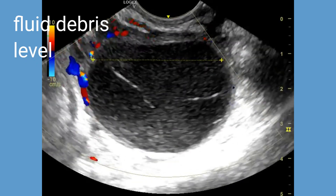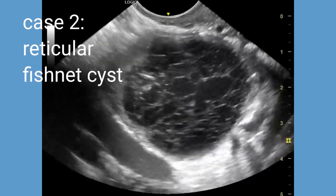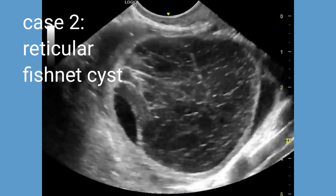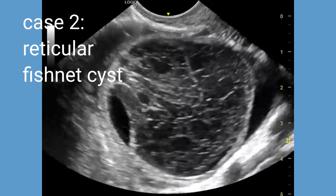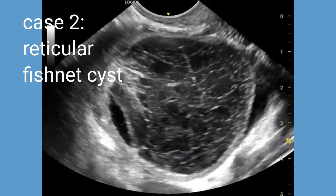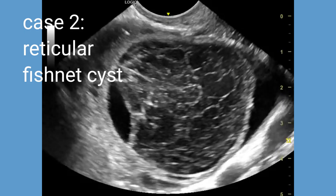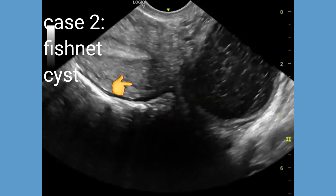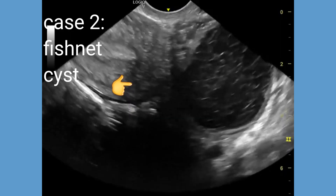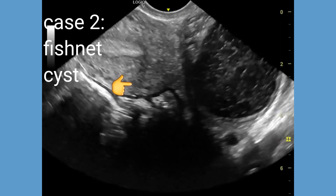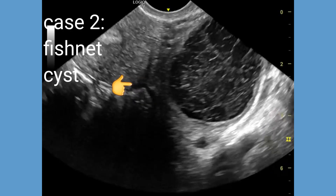Next, we come to the fishnet appearance in hemorrhagic ovarian cysts. The appearance of a fishnet, also known as a reticular or lace-like pattern, is a term used to describe the internal structure of some types of hemorrhagic ovarian cysts. The fishnet or reticular appearance is characterized by a fine mesh-like or lacy pattern of septations — internal walls — within the cyst.